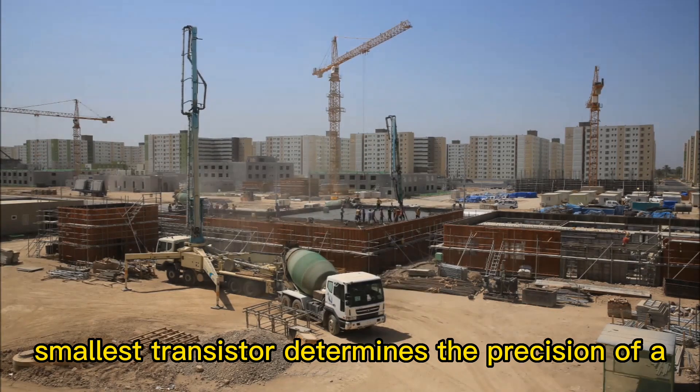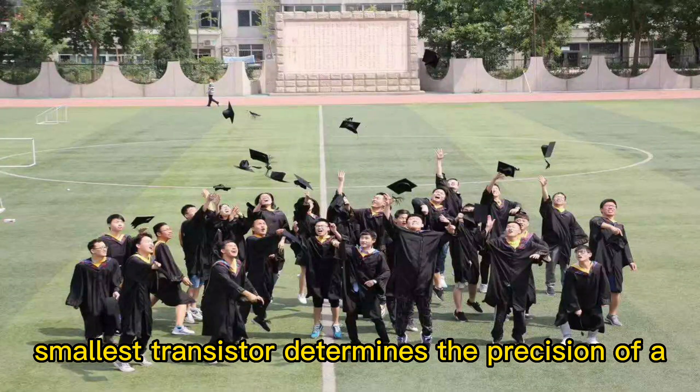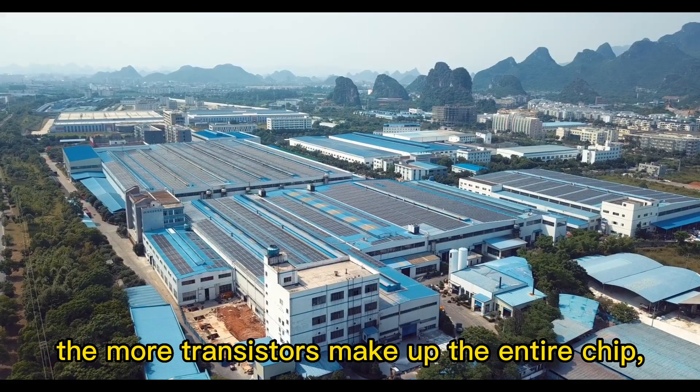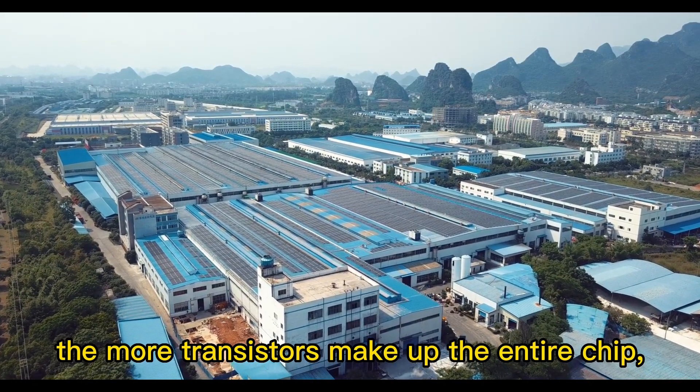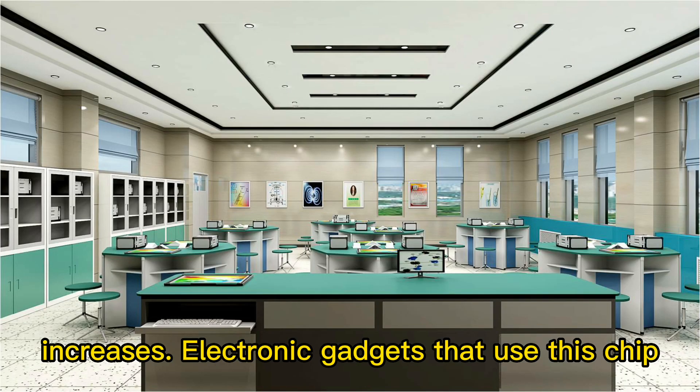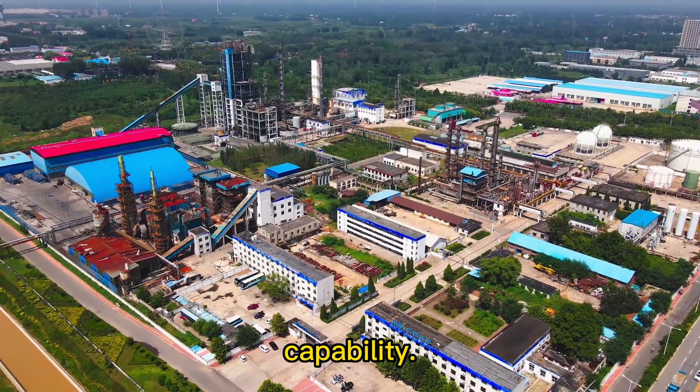The diameter of the smallest transistor determines the precision of a typical chip. The smaller a single transistor, the more transistors make up the entire chip, and the device's computational capability increases. Electronic gadgets that use this chip may also have increased computational capability.